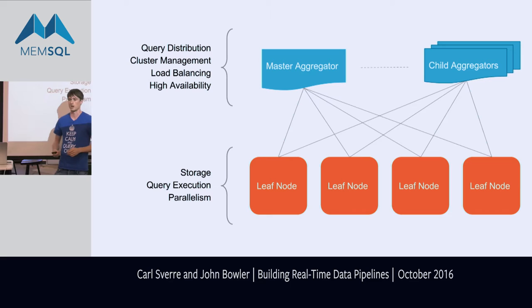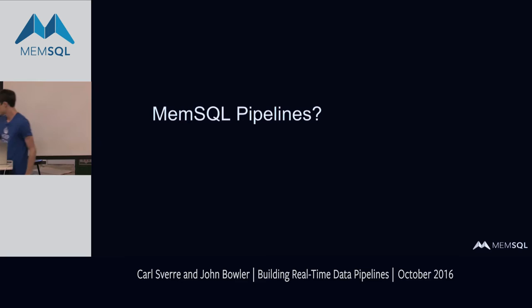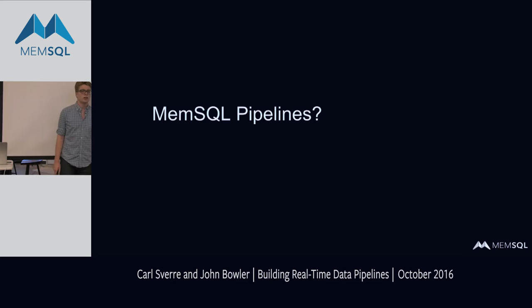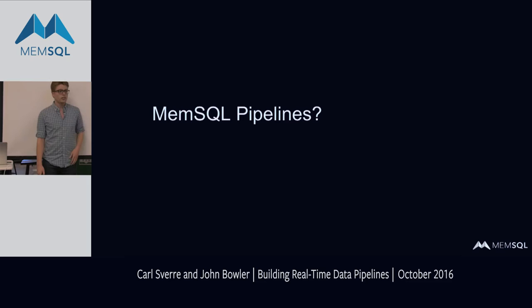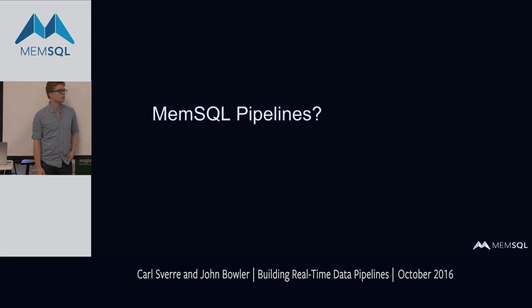Pipelines are our solution to real-time streaming. For those familiar with analytics pipelines, you might have your production database going into a Kafka stream, writing to S3, or a Hadoop data lake, a computation framework like Spark or Storm, and then an analytics database downstream like Redshift, with BI tools hitting it. Pipelines are our attempt at taking a step back and solving the core problem: how do you easily, robustly, and scalably create this kind of streaming analytics workload end to end?